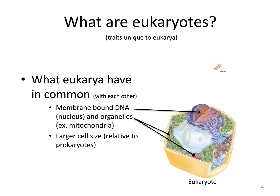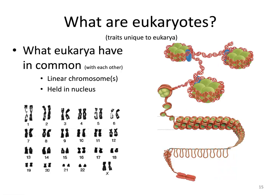In general, eukaryotes tend to have a much larger cell size relative to prokaryotes. Looking at the typical relative size of a eukaryotic cell versus a prokaryotic cell, it can vary, but eukaryotes tend to have larger cells than prokaryotic cells.